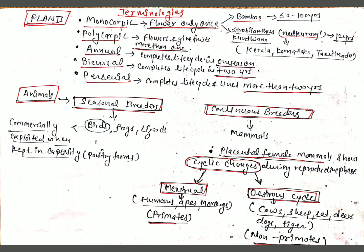Now let's talk about terminologies used for animals. Number one is seasonal breeders: organisms that breed only during a certain time period of the year to produce offspring — examples are birds, frogs, and lizards. However, birds can be commercially exploited when kept in captivity, like in poultry farms. Number two is continuous breeders: animals that are reproductively active throughout their reproductive phase — examples are mammals.